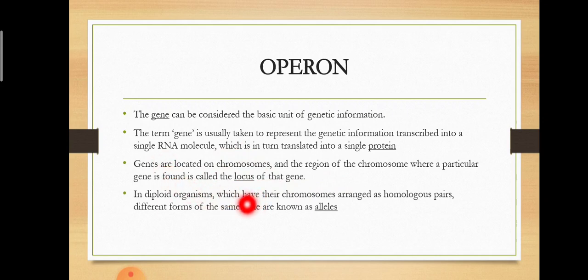In diploid organisms which have their chromosomes arranged as a homologous pair, different forms of the same gene are known as alleles. For example, in humans or in any diploid organism, we have a homologous pair of chromosomes. There may be two or more different forms of the same gene, and those are known as alleles — for example, curly hair or straight hair. Those genes are located on homologous pairs and the differences in genes are known as alleles.